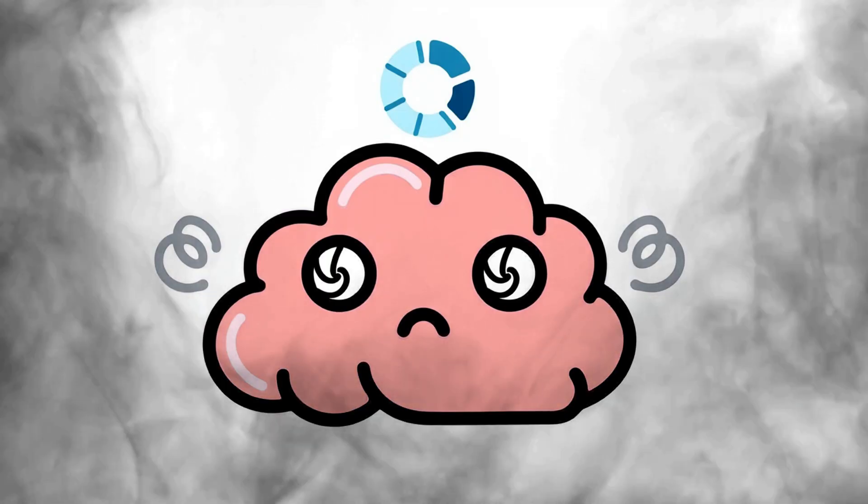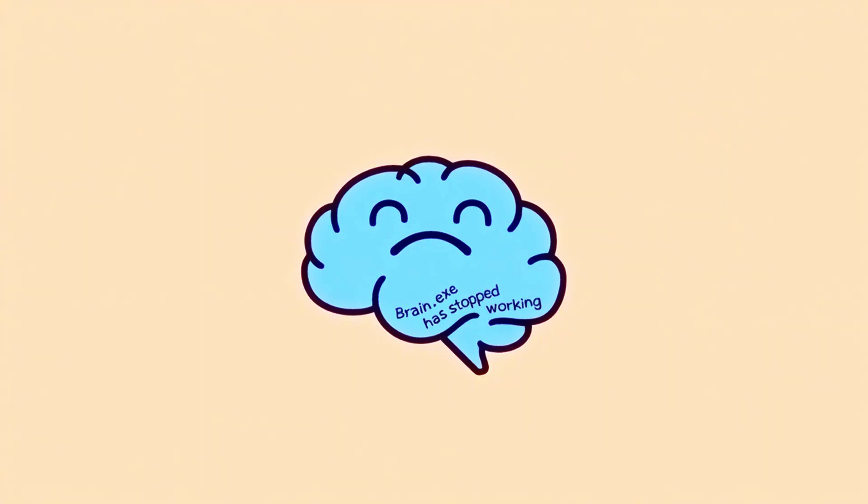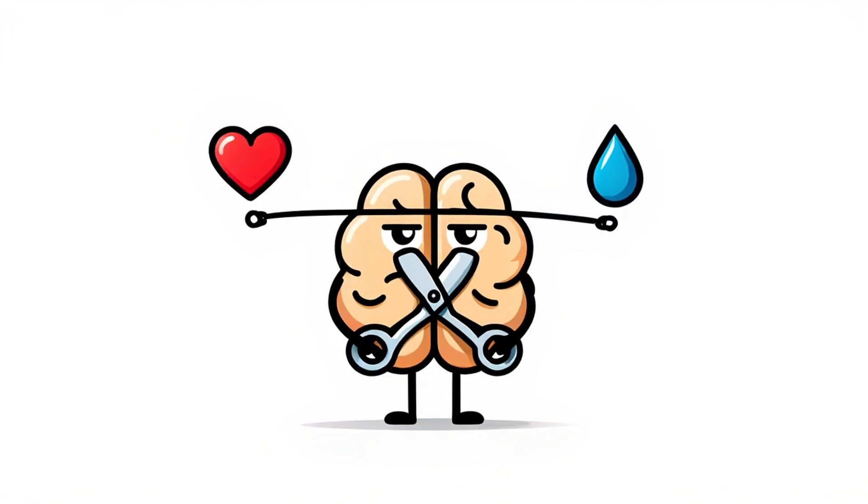Your brain gets overwhelmed. And just like an old phone trying to run 12 apps at once, it freezes. So it does what it thinks is smart. It cuts off emotions altogether.